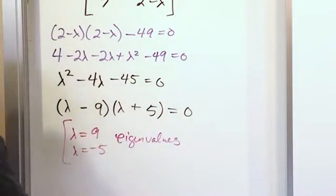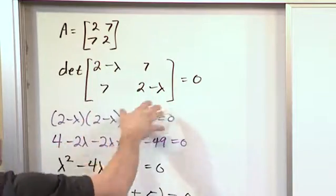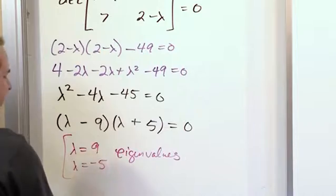You basically follow the exact same procedure all the time. You put the minus lambdas on the diagonal. Take the determinant. In this case we're using crisscross. We get down here and we find the eigenvalues.